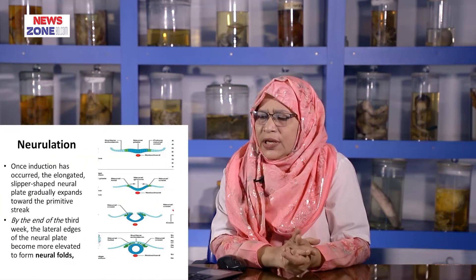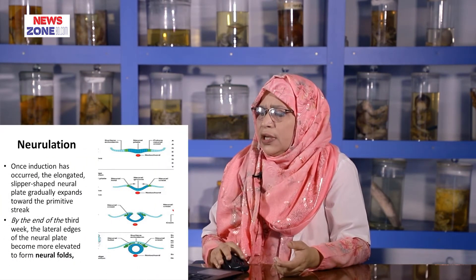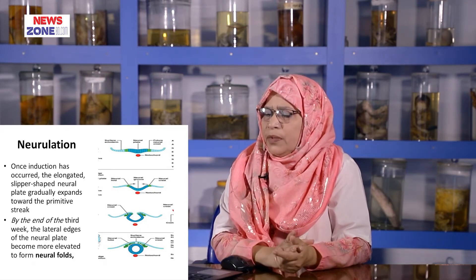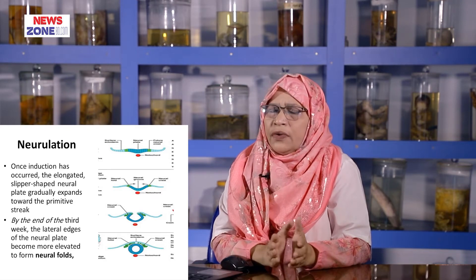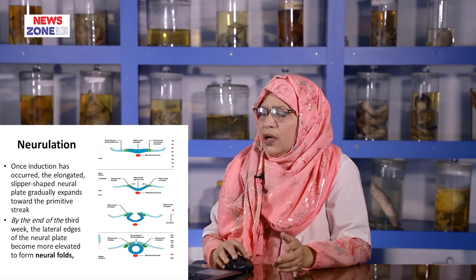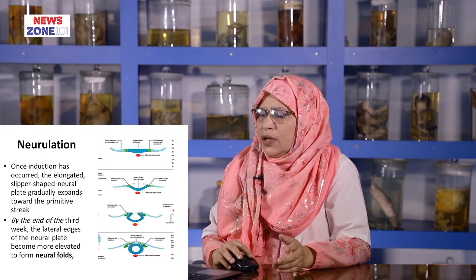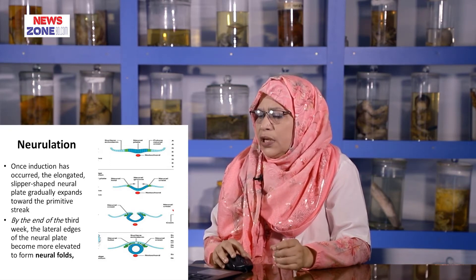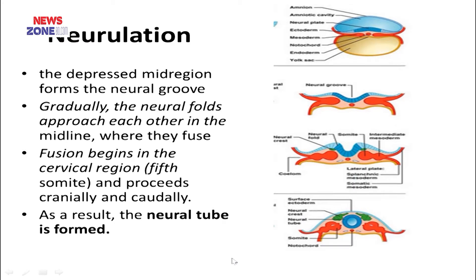Once induction has occurred, the elongated neural plate edges expand gradually towards the primitive streak. At the end of the third week, the lateral edges of the neural plate are elevated and form the neural fold. The mid-region of the neural plate invaginates and forms a groove, known as the neural groove.